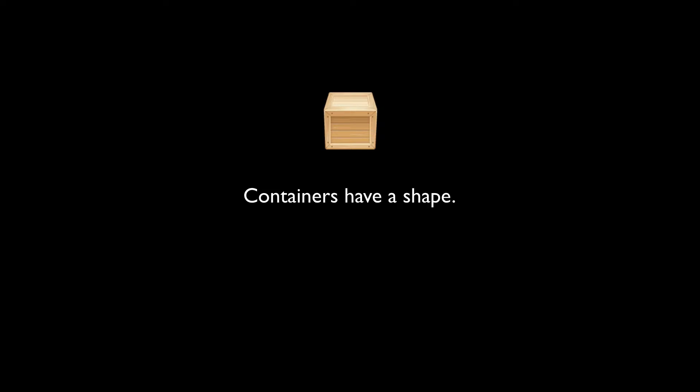I've got a box on screen to point out that containers in the real world have shapes. It could have been a milk jug, a cylinder, a sphere, a wallet — whatever you think of when you think of a container, something you put things in. The next thing to consider is that when we're putting data into containers, the containers have a shape but data has a shape as well.